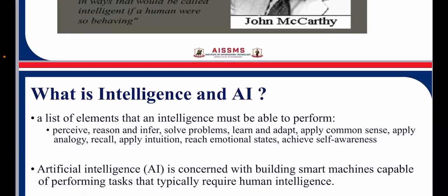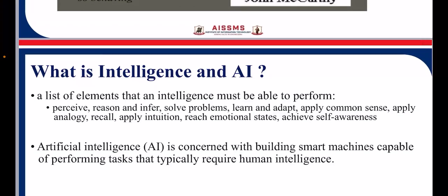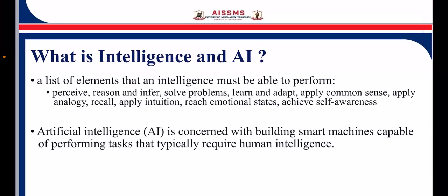What is intelligence? What is AI? AI is concerned with building a smart machine capable of performing tasks that typically require human intelligence. So we are giving intelligence to a machine, and that machine is going to apply that intelligence to decide what to perform in that particular phase.